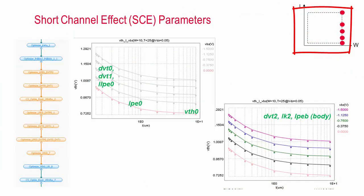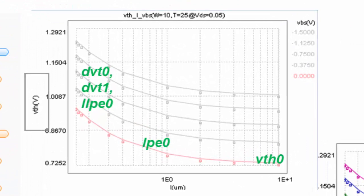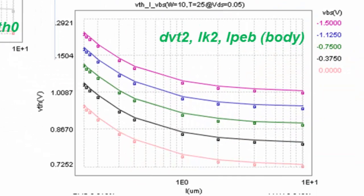Now, we move to look at the L-array devices with the fixed Wmax. In the graph on the upper left, we see the relationship between threshold voltage VTH and the length of the channel L at VBS equals 0 only. This curve describing the short channel effect is captured using the parameters DVT0, DVT1, and LLPE0. Next, in the graph at the lower right, we see the body-bias dependence as VBS ranges from 0 to -1.5V. Here are the model parameters used to capture this dependence.